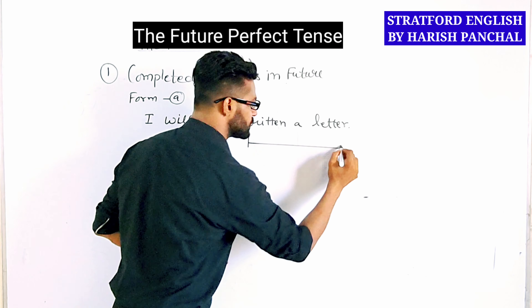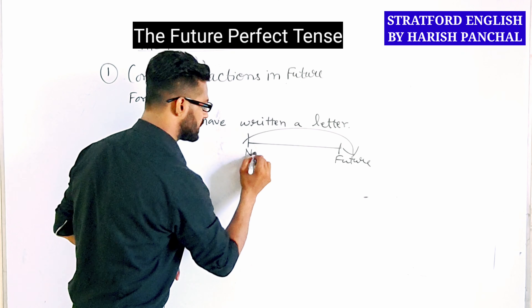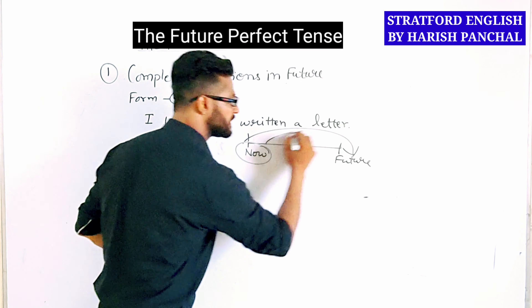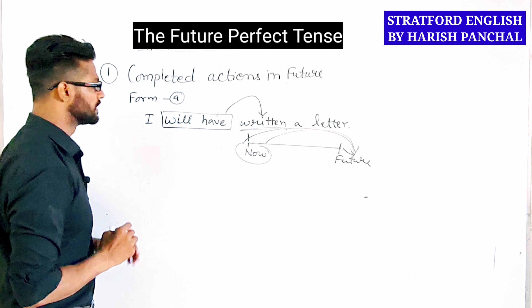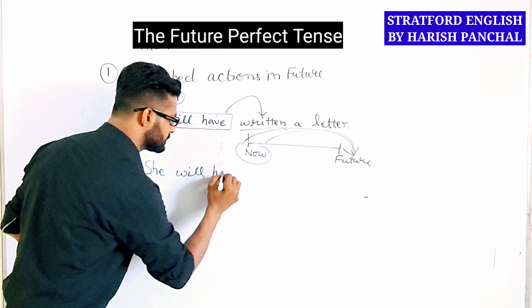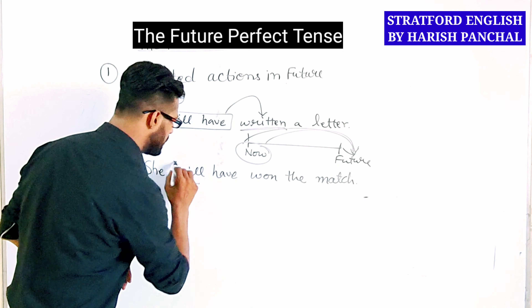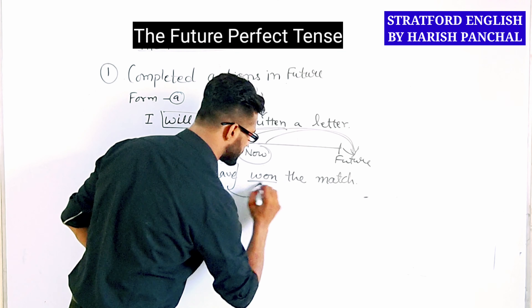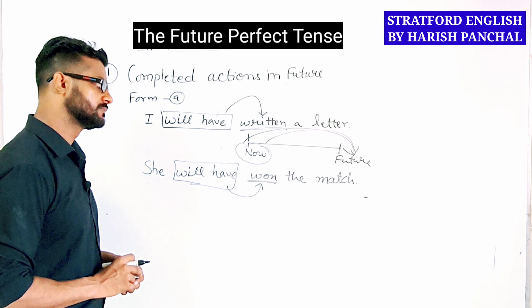So the future perfect tense is used in these two situations, and there are two forms of future perfect tense. Form number one is 'will have' plus past participle. Form number two is 'be going to have' plus past participle.